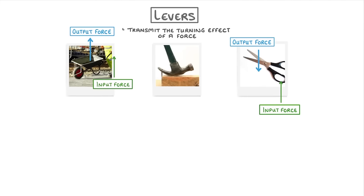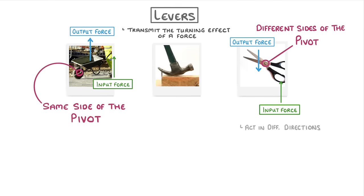In all of these cases, there are two important things to notice. One is that if the input and output forces are on different sides of the pivot, like in the case of our scissors, then they'll act in different directions - so one up and one down. Whereas if they're both on the same side of the pivot, like in our wheelbarrow, they'll both act in the same direction.